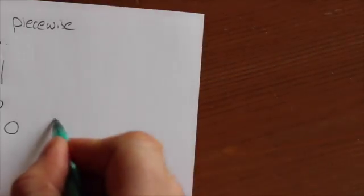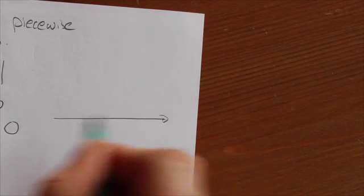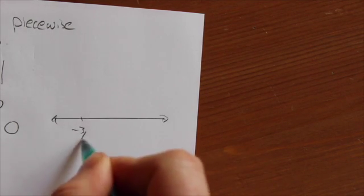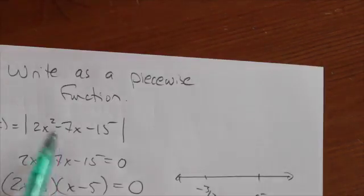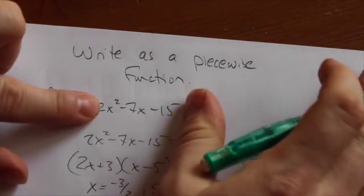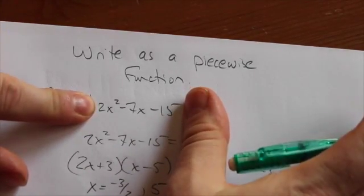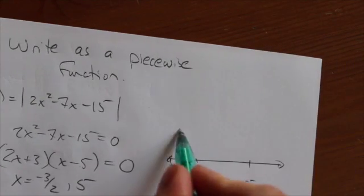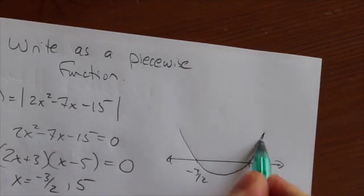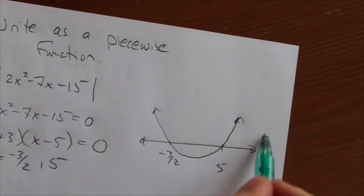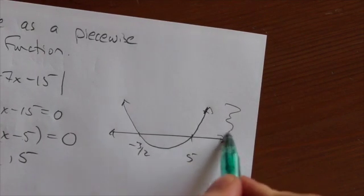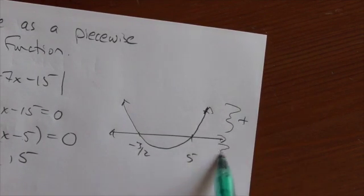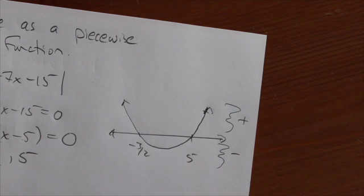Now I know if I look at the number line here - this is a quadratic. If you just ignore the absolute value signs for a second, that's a quadratic that opens up. So it does this. Now anything here above is positive, anything here below is negative.